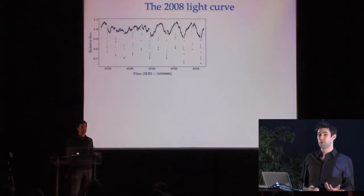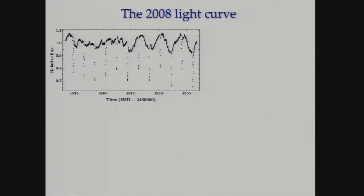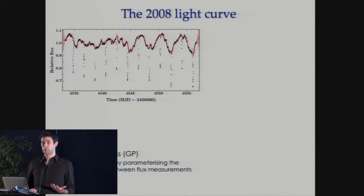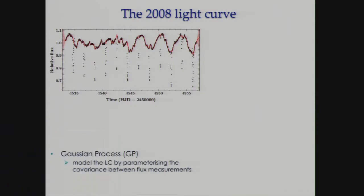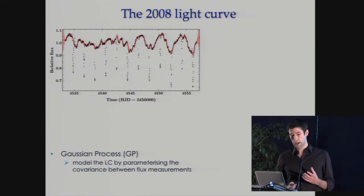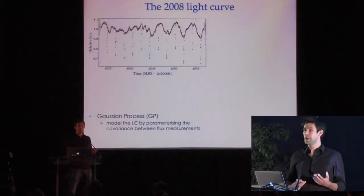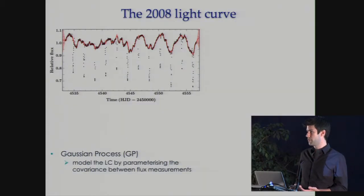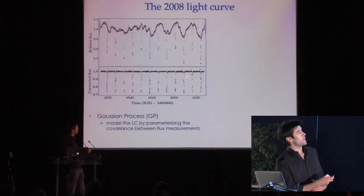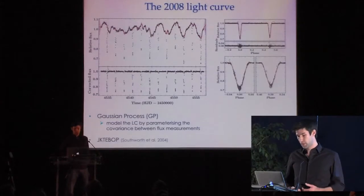There's a wealth of information contained within the eclipses, but to get at it in a system like this, we first need to model and account for the out-of-eclipse variability. We do this using Gaussian processes — a way of modeling the light curve by parameterizing the covariance between pairs of flux measurements rather than explicitly specifying an expression for the fluxes themselves. The red line and pink shaded region show the mean and standard deviation of the GP's posterior predictive distribution, which we use to remove the out-of-eclipse variability and propagate uncertainties through to our residual light curve.